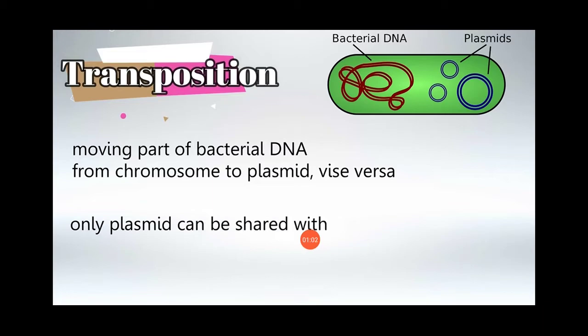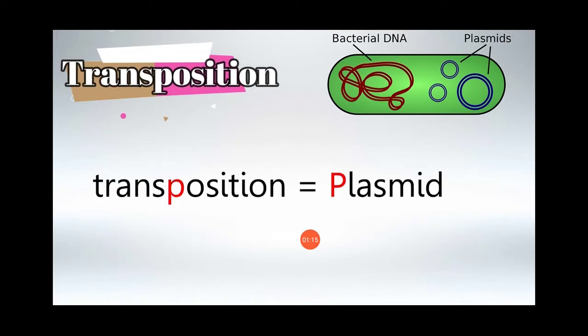Bacterial DNA is called plasmid. Sexual reproduction is called plasmid. Transposition is another name for the formation of plasmid.